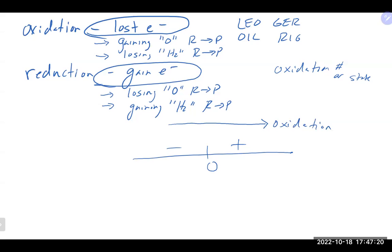If a species gains electrons, it becomes more negative. So if the oxidation state is moving in the more negative direction from the left side to the right side of the arrow, that species is going through reduction. Very simply, one direction means oxidation, the other means reduction.